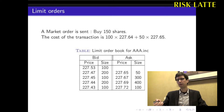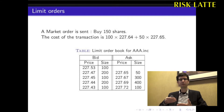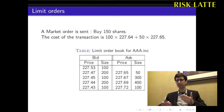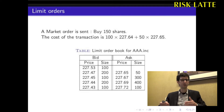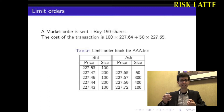Moreover, we see that the market order creates a hole in the limit order book — there are missing shares. It pulls the price away from the fundamental value. It's going to take some time before new limit orders are sent to refill the limit order book and bring back the price towards what we call the fundamental value. This is basically the trading mechanism that happens in the stock market.